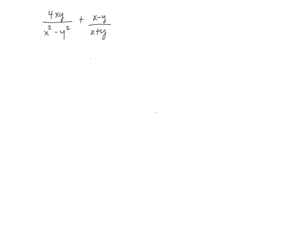This first one you can't factor, so I'll just leave it as is. Not the first one, the second one. But the first one I can factor. So I have a 4xy, and then on the bottom, I can factor that into a difference of squares. So x minus y, x plus y.